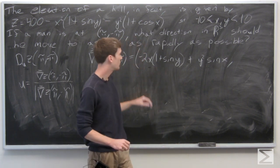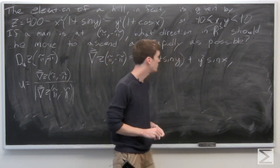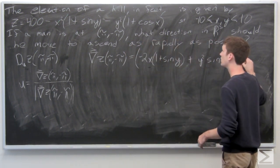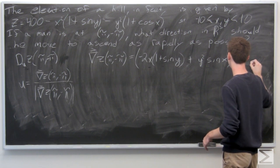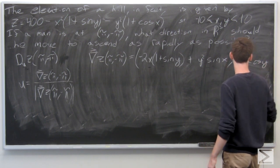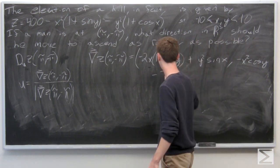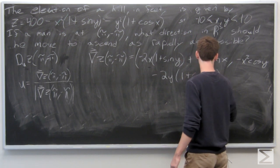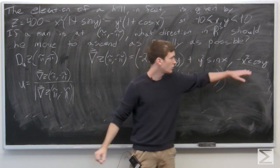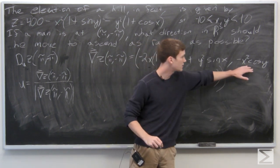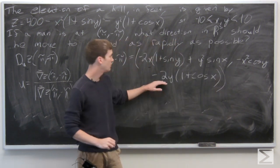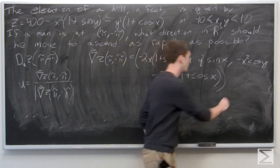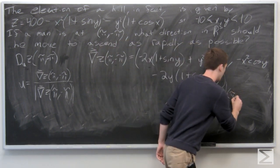Now we calculate the partial derivative of z with respect to y. The partial derivative of z with respect to y is negative x squared cosine y minus 2y times the quantity 1 plus cosine x. We want to evaluate both partial derivatives at (π, -π).